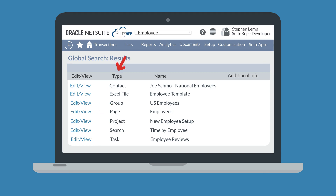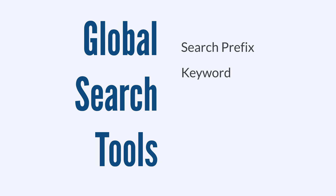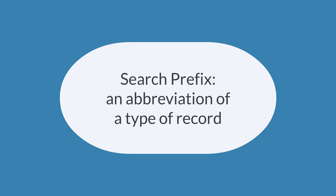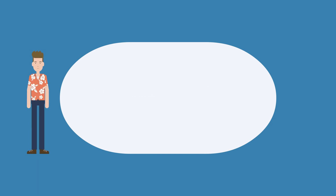NetSuite will bring up many different types of records when you use a broad search like this. If you know the exact type of record you are looking for, you can use some global search tools to narrow down your search. Two of those tools are the search prefix and the keyword. A search prefix is just an abbreviation of the type of record you need. If you're looking for a specific record within a record type, then you would use a colon after the search prefix and include a keyword from the record you are searching for. For example, if you were searching for an employee named Joe, your search prefix would be something like EM or EMP followed by a colon, and the keyword would be Joe.